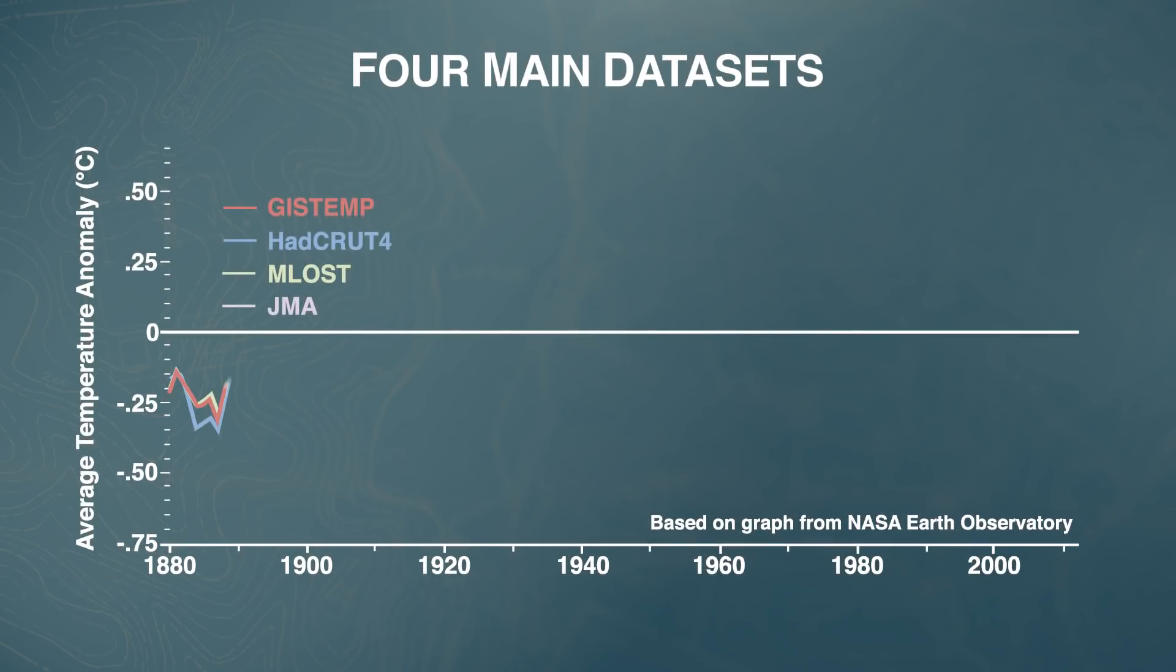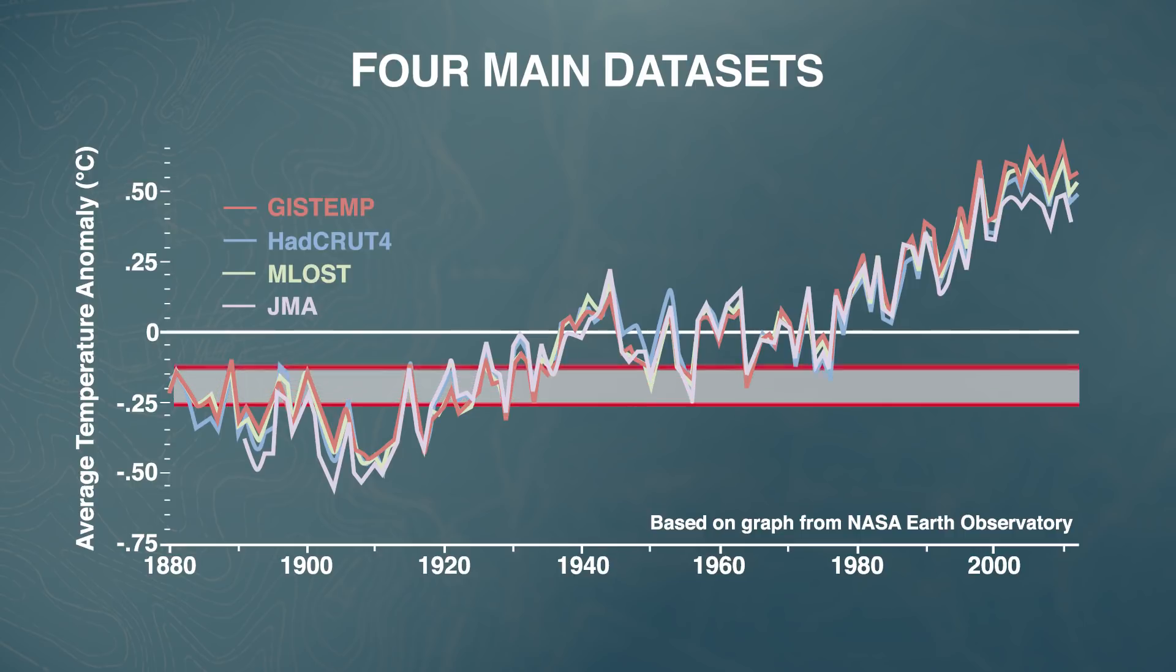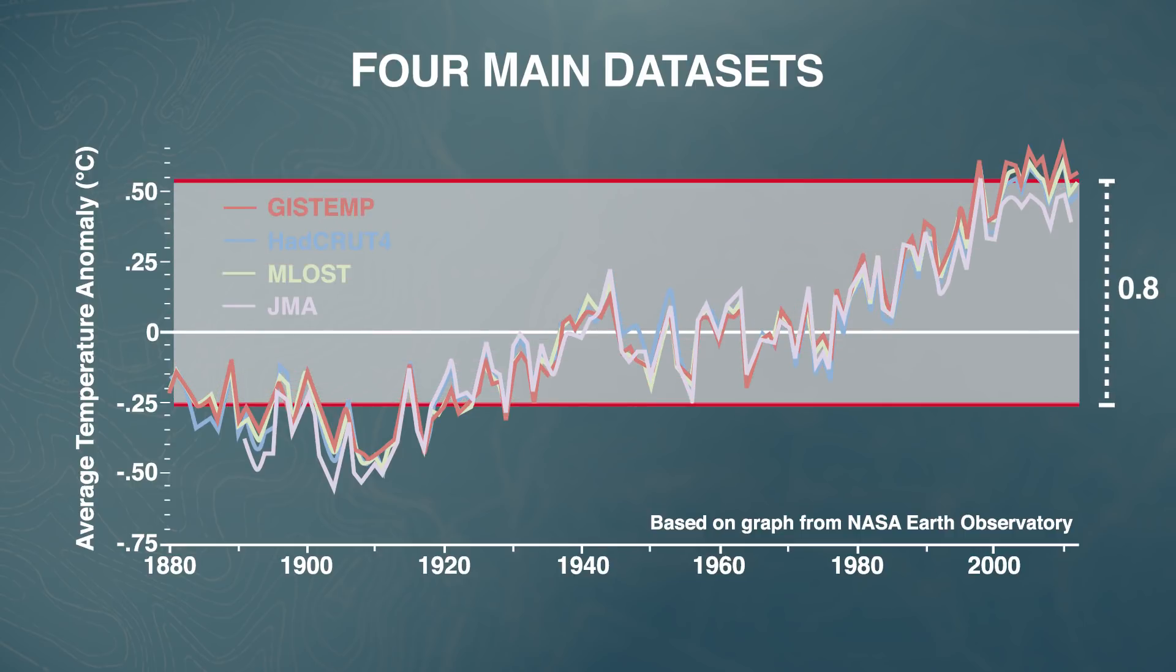Here is a chart displaying the average global temperature readings from these four main data sets. Obviously this does not include proxy data, but instead the graph shows that since 1880, the temperature has increased on a global average by about 0.8 degrees Celsius or 1.4 Fahrenheit, with two-thirds of this increase occurring since 1975.